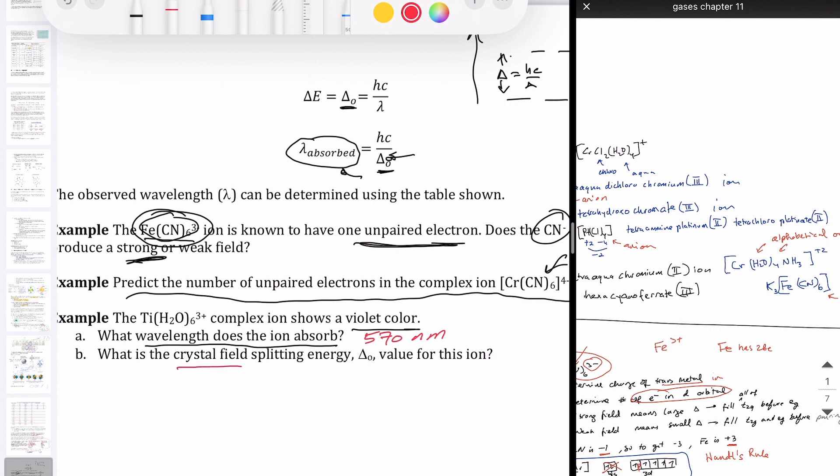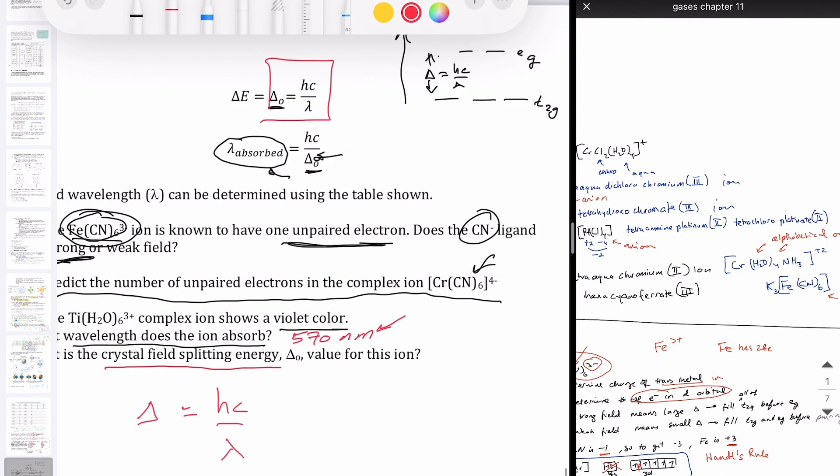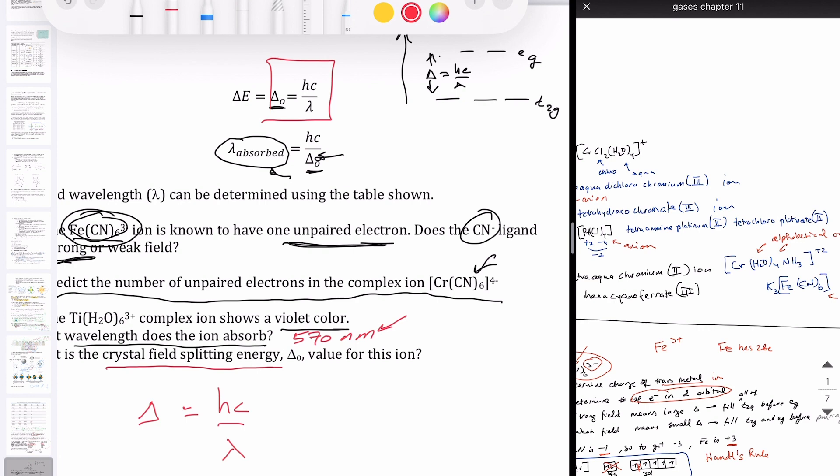And the next question is, what is the value of the crystal field splitting energy, which is your delta, for this ion? If it absorbs 570 nanometer, then what's the actual delta? Well, remember we said earlier that the delta is just equal to hc over lambda. In other words, the photon that is being absorbed, the energy of that photon has to match the gap in energy between the lower d-orbital set versus the higher orbital set, the t₂g and the eg. And so I can calculate, therefore, the delta by just taking hc over lambda.